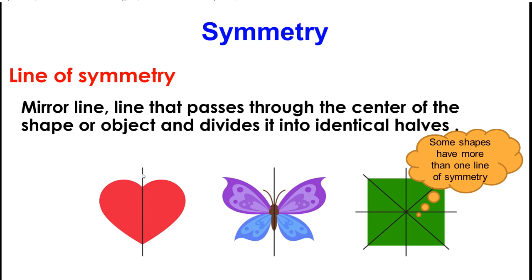Here I have a heart. If I draw a line down the middle of this heart, I can see that this half is identical or the same to this half. It is a line of symmetry.